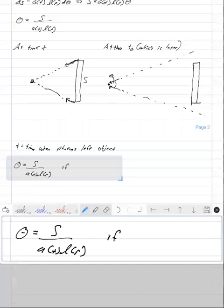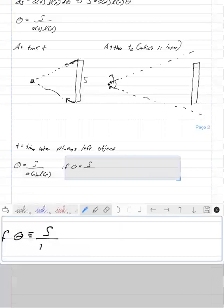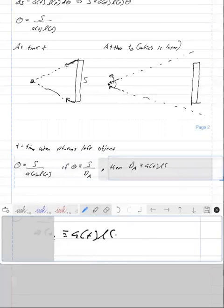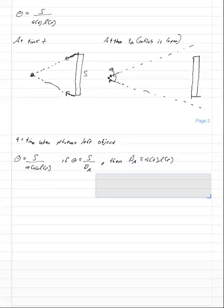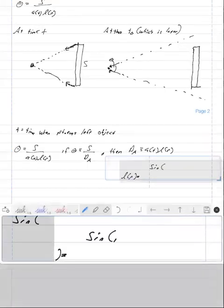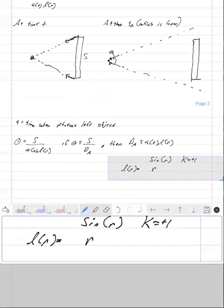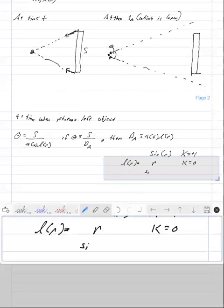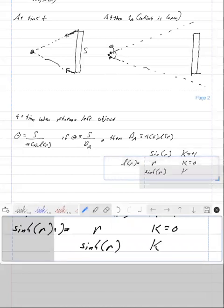And if we want to define theta to be the proper distance divided by some dA, which is the angular diameter distance, then we have that the angular diameter distance is defined to be A of T times L of R. And once again, L of R is equal to sine of R for K equals plus one, R for K equals zero and the hyperbolic sine of R for K equals minus one.